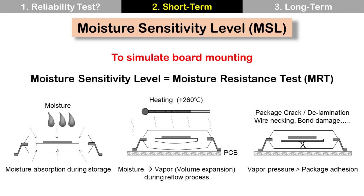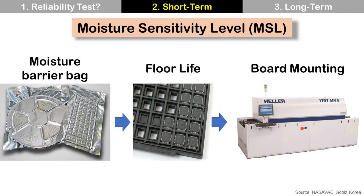Moisture Sensitivity Level test simulates the board mounting process and identifies potential failures during this process. It is also called Moisture Resistance Test, MRT. Typically, plastic packages absorb moisture during storage. That moisture turns into vapor with volume expansion during the reflow process at high temperature. Pressure from that volume expansion causes delamination, package cracks, etc. MSL test is based on JEDEC standard and provides device sensitivity to moisture-induced stress. It can predict floor life, determining how long a device can be exposed to humidity and temperature after opening the moisture barrier bag and before board mounting. It is useful to determine proper storage and handling.